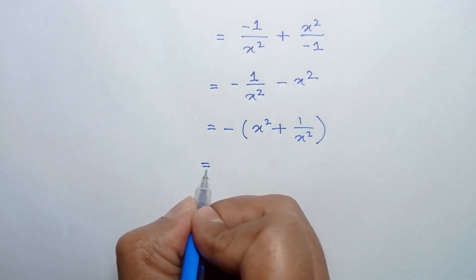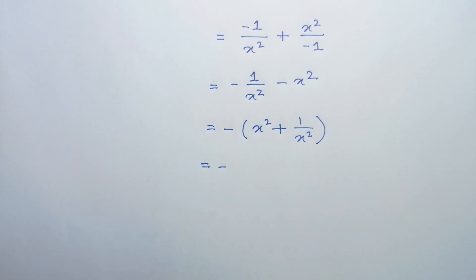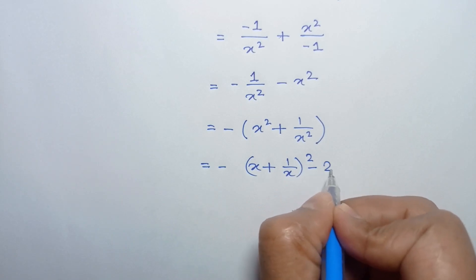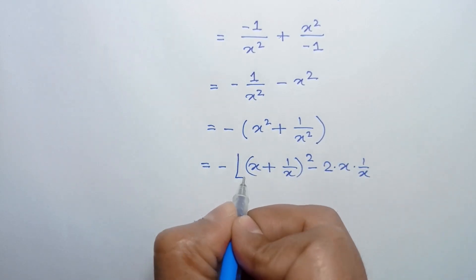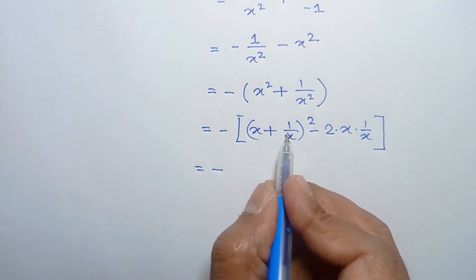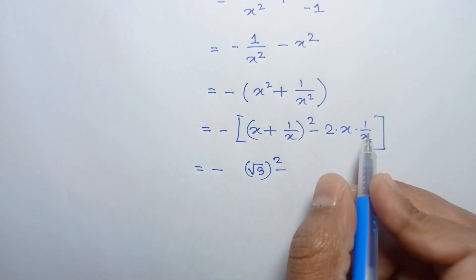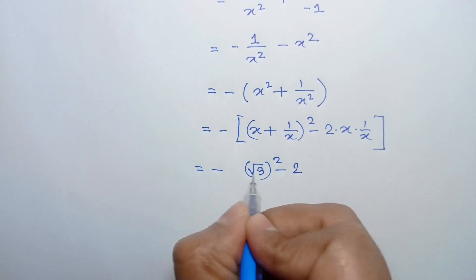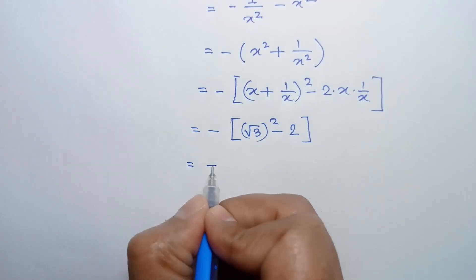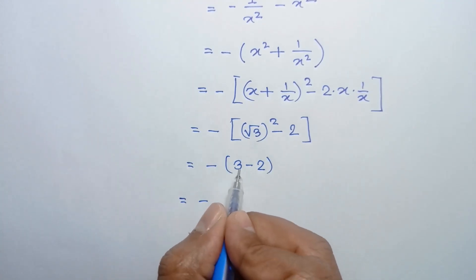Applying the formula a squared plus b squared equals a plus b whole squared minus 2ab, we can write x squared plus 1 over x squared as x plus 1 over x whole squared minus 2 times x times 1 over x. Substituting the value of x plus 1 over x as square root of 3, this becomes square root of 3 whole squared minus 2, which equals 3 minus 2, which is 1. So the answer is negative of 1, which equals negative 1.